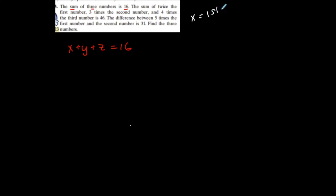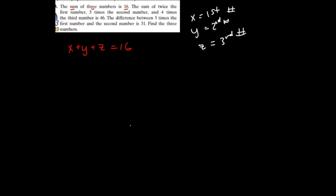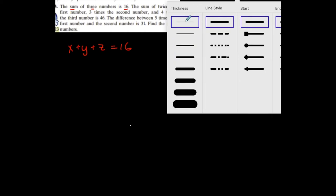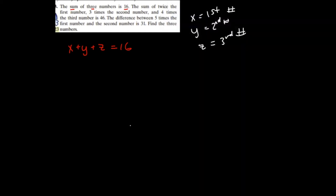x is the first number, y is the second number, and z is the third number. So I want to remember what x, y, and z represent. The sum of twice the first number, three times the second number, and four times the third number is 46.